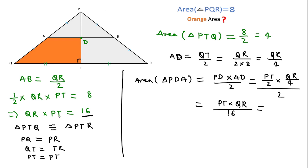This QR into PT over 16, which is 16, that is 16 over 16, which is equal to 1. So area of this triangle is 1 unit.